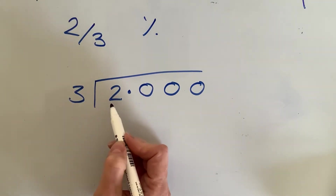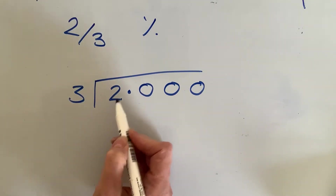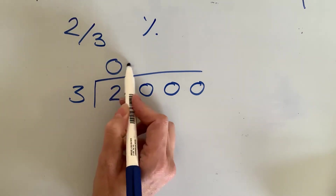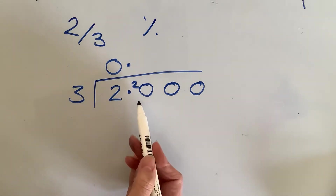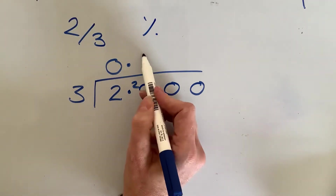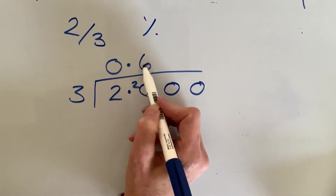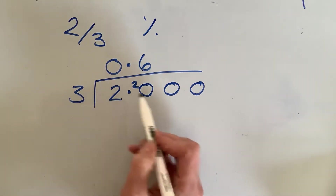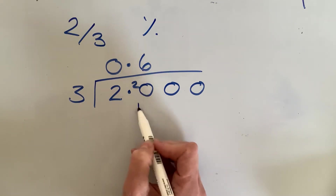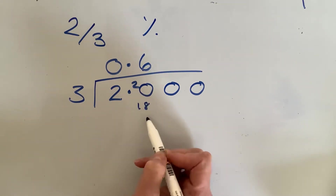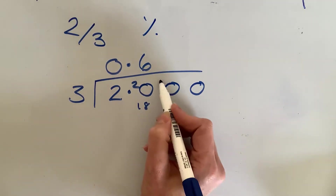How many 3s go into 2? Well, that's none. So I'm going to carry the 2 over, and I've got 20. How many 3s go into 20? I think that's 6, because 6 times 3 is 18. 18 is the highest number that goes into 20. So then I do 20 take away that 18, leaves me 2.